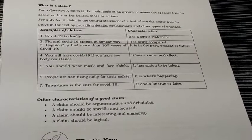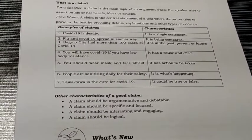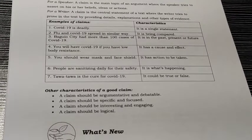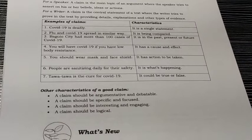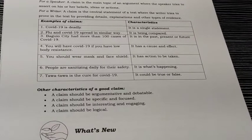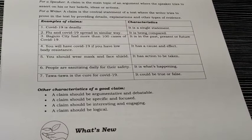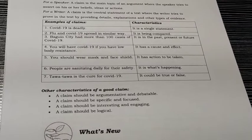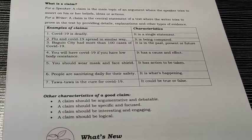Number 5: 'You should wear a mask and face shield.' It has an action to be taken — it is imperative, meaning after reading it, something should be done. That is calling for action. Number 6: 'People are sanitizing daily for their safety.' It narrates what is happening, what is existing — it is describing the situation.